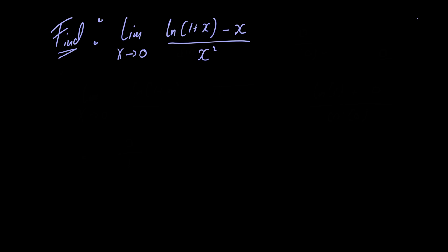Now notice what happens if we just let x tend to 0. In the numerator we have the natural logarithm of 1 and in the denominator we have 0. This is equal to 0 divided by 0.